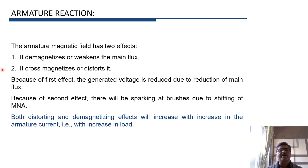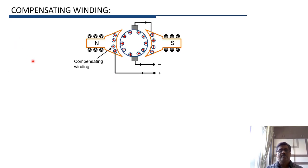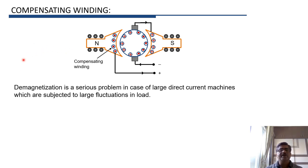Therefore some corrective action must be taken to neutralize the effect of demagnetization and cross-magnetization of the main flux. Let us first look at compensating winding. Because of armature reaction there is demagnetization and cross-magnetization. This compensating winding is useful to neutralize the demagnetization effect, which is a serious problem particularly if the machine size is large.